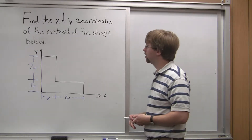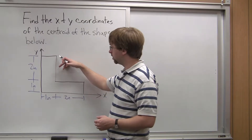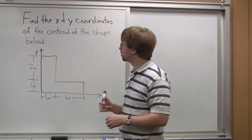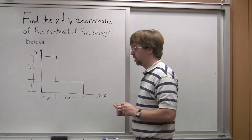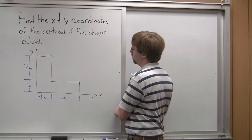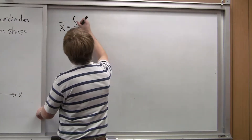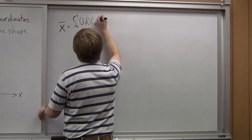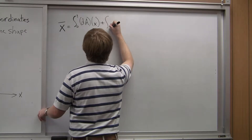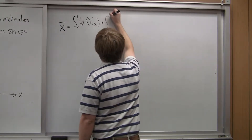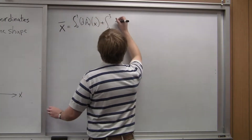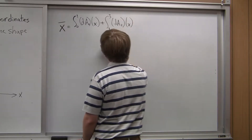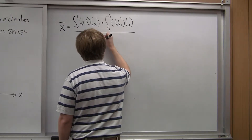We can see that we need to break this up. For the first inch or so, the height is three inches. Then for the next two inches, the height is going to be equal to one inch. So we have the integral from zero to one of dA1 times X, plus the integral from one to three of dA2 times X, all divided by the area.